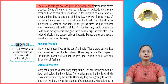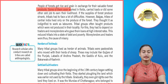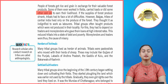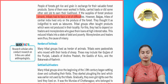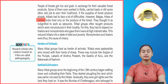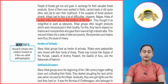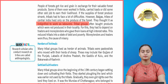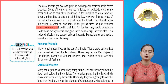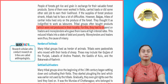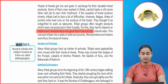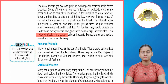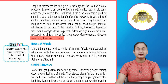People of forests got rice and grain in exchange for their valuable forest products. Some even worked in fields, carried loads, or did other odd jobs to earn their livelihood. If supplies of forest produce shrank, tribals faced great difficulties. However, the Baigas tribes of central India lived only on forest produce and considered it undignified to work as laborers. Tribal groups often bought products not produced in their locality, depending on traders and moneylenders who gave loans at high interest rates, reducing tribals to a state of debt and poverty.